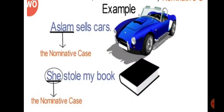One more example: 'She stole my book.' Here the pronoun 'she' is in the nominative case. She is the doer of the action, and that's why the pronoun 'she' is in the nominative case. So a noun or pronoun is in the nominative case when it is the doer of the action.